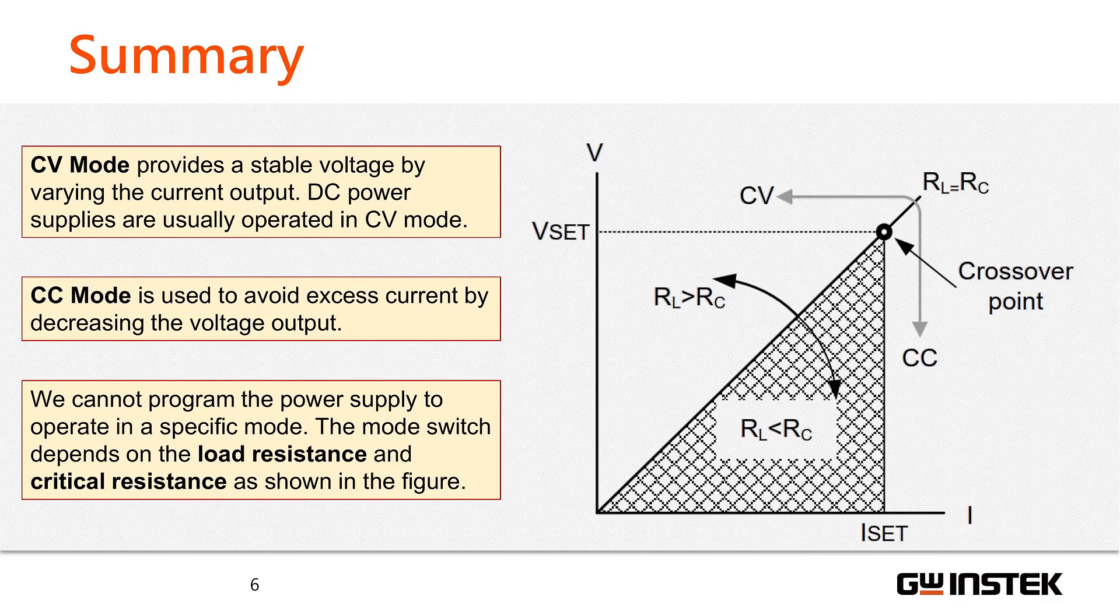Now let's recap and summarize. CV mode provides a stable voltage by varying the current output. DC power supplies are usually operated in CV mode. CC mode is used to avoid excess current by decreasing the voltage output.